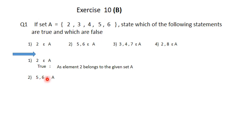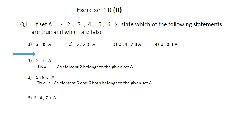Next: 5 and 6 ε A. Both 5 and 6 are present in set A, so this statement is true - elements 5 and 6 both belong to the given set A. Next: 3, 4, 7 ε A. While 3 and 4 are in the set, 7 is not there, so this statement is false - element 7 does not belong to the given set A.